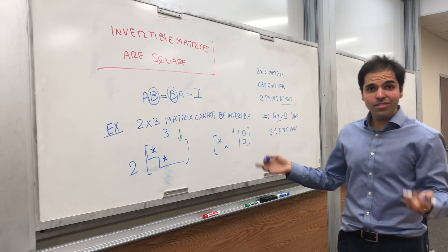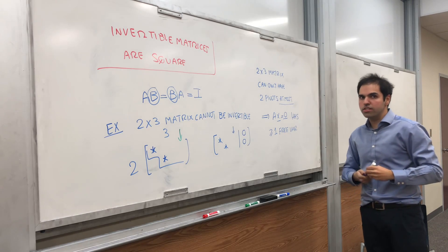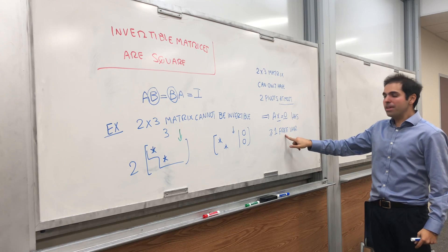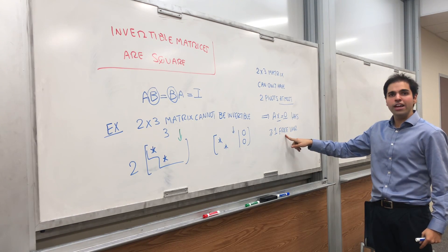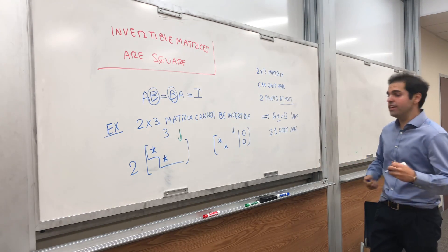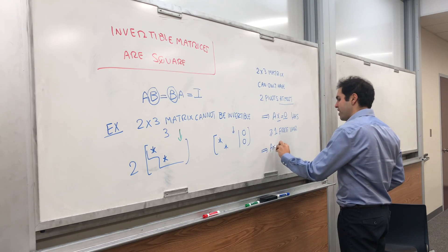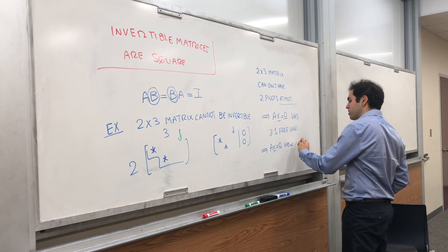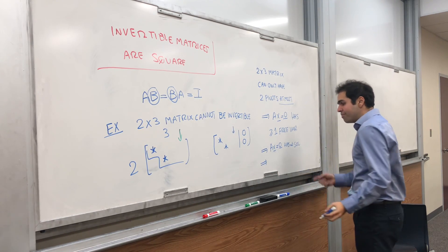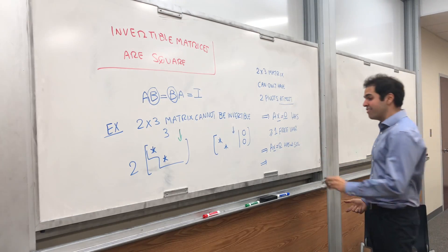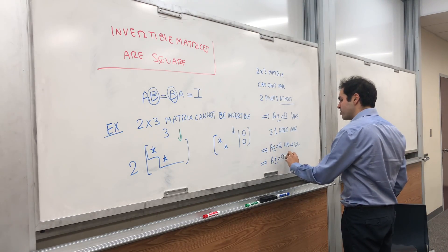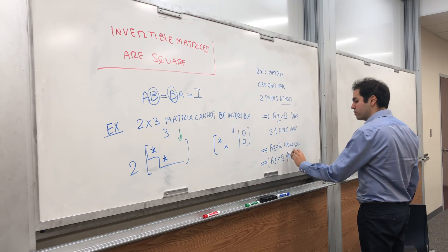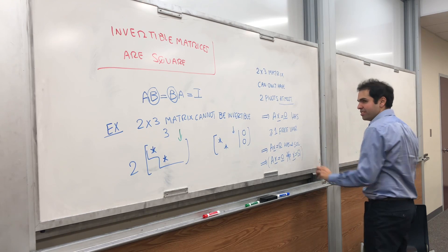Think of it in the terms of solving the equation Ax equals 0. If you have a matrix with just two pivots, and you want to solve Ax equals 0, there must be at least one free variable, because the free variables are in the non-pivot columns. So it means Ax equals 0 has at least one free variable. What does that mean?